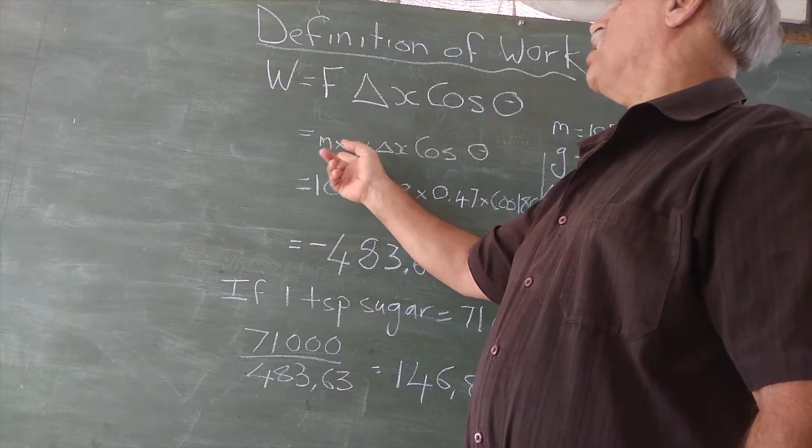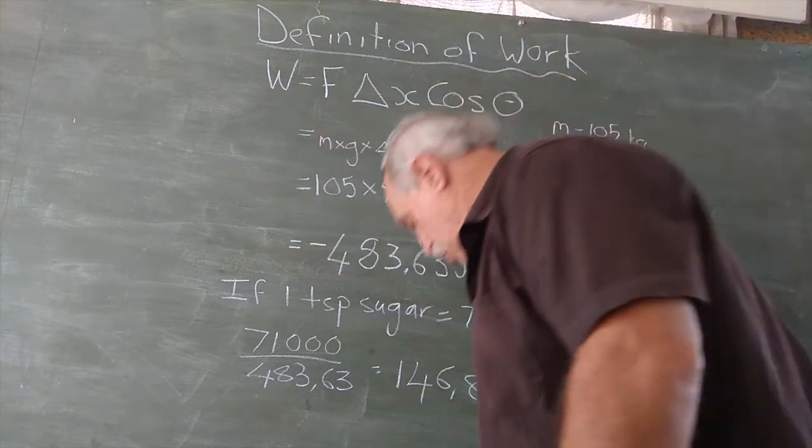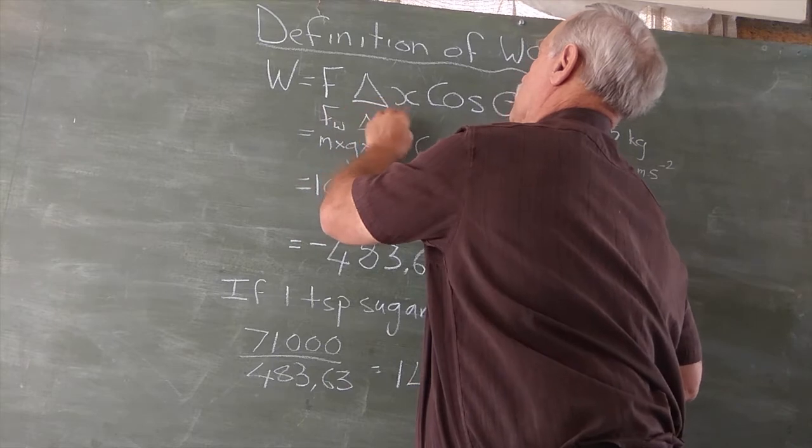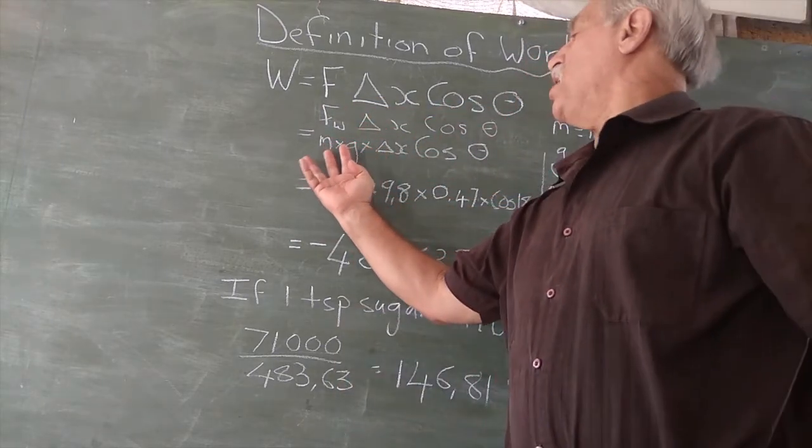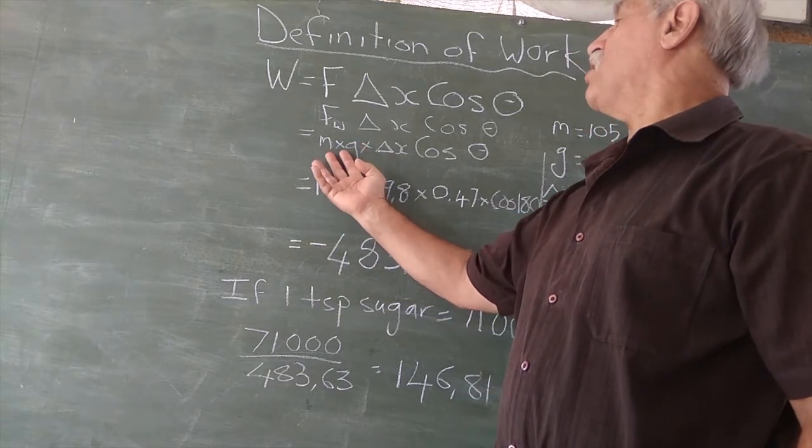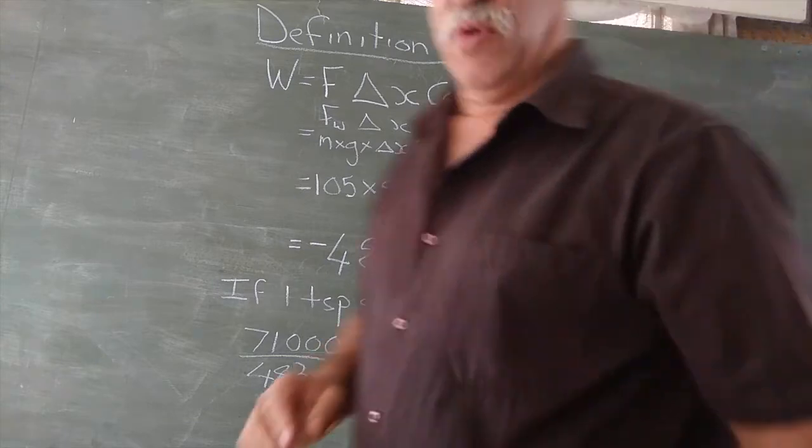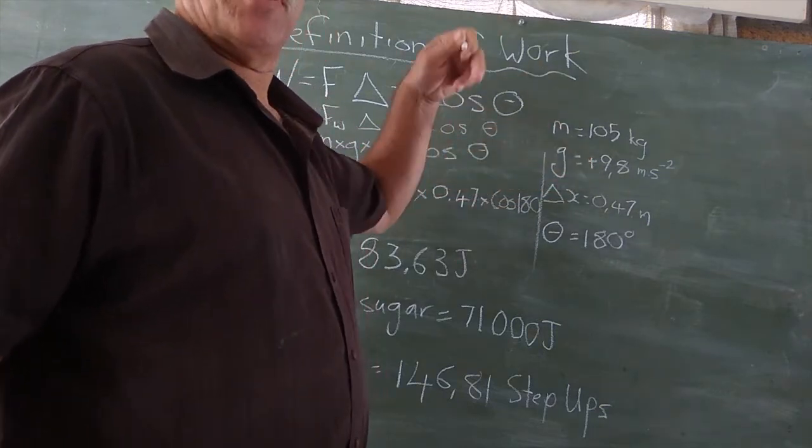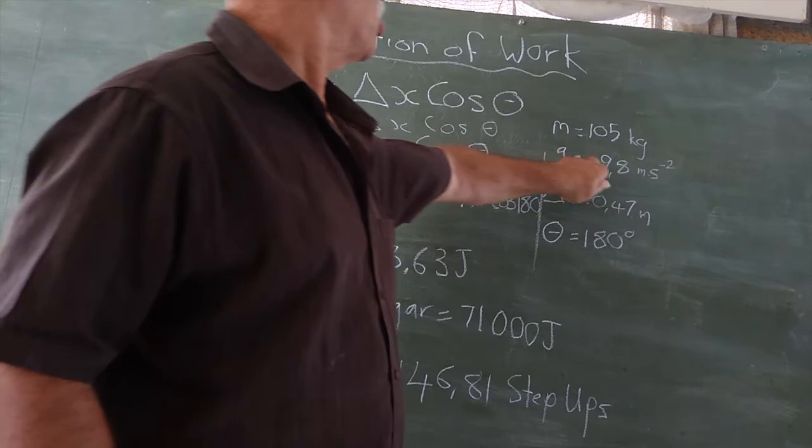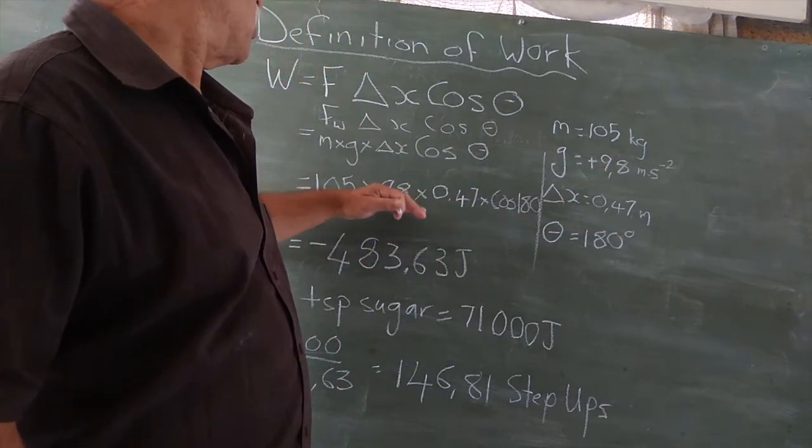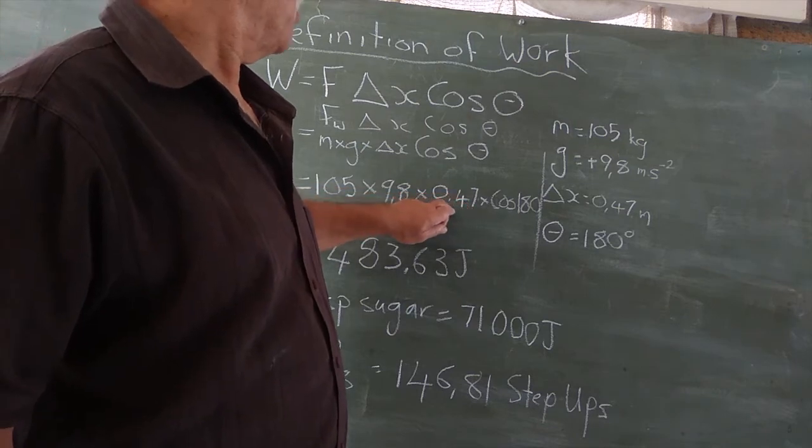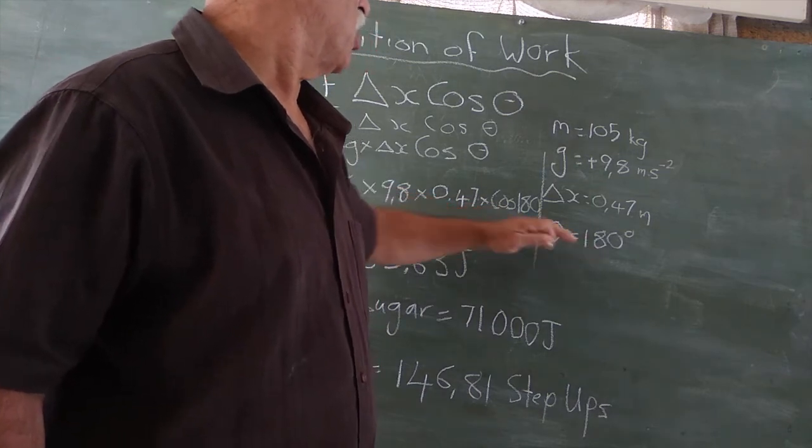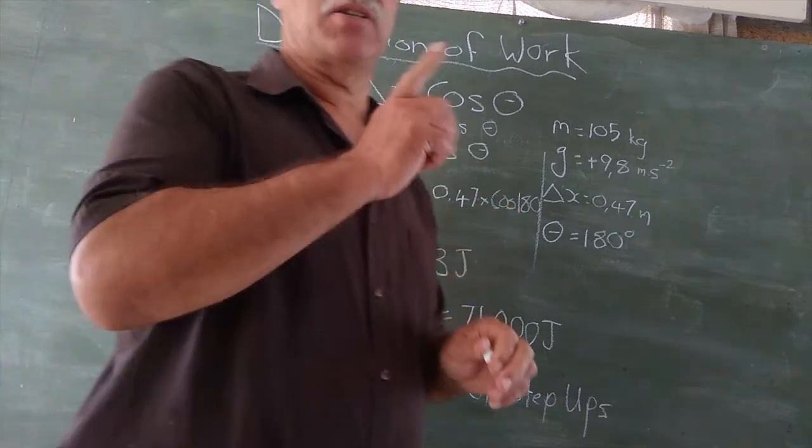Force is mg. That is the force of weight. I could have written force of weight delta x cos theta. So, we're using mg as our force. Mass times acceleration due to gravity. We've got our values here. The mass is 105. G is positive 9.8. Everything we're doing in this video is down. Down is positive. So mass times that. The direction we're going is half a meter. That's the change of displacement. And then our cos theta. Now, theta is 180. That takes a bit of explaining.